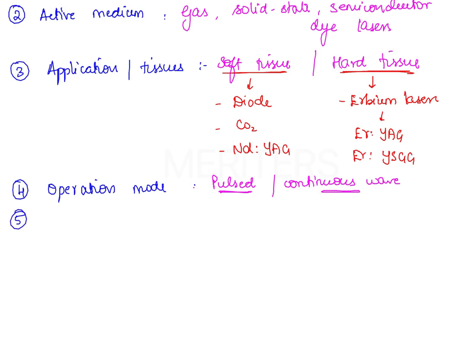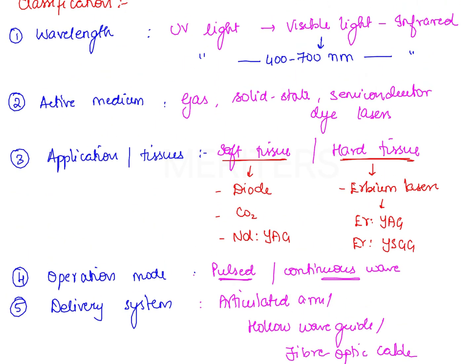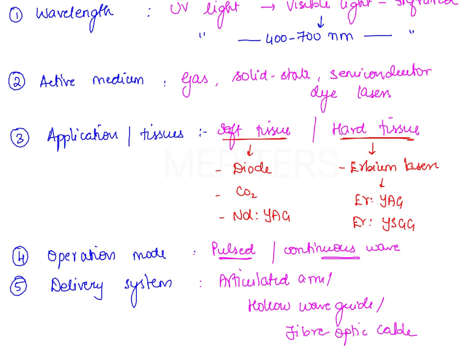Based on the delivery system, lasers are classified as articulated arm, hollow waveguide, and those employing fiber optic cable. So the important classifications of lasers are based on wavelength, active medium, application, operation mode, and delivery system.